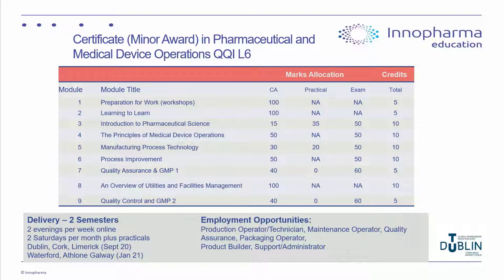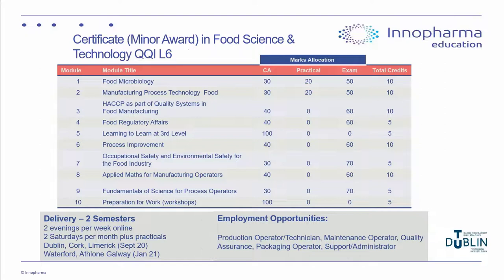The Level 6 Certificate in Food Science and Technology is very similar in structure — two semesters, two evenings per week, two Saturdays per month. It covers areas like food microbiology and food regulations. It starts in Dublin, Cork, and Limerick in September, then Waterford, Athlone, and Galway in January. Combining both Level 6 programs gives you a full Level 6 Major Award — a Higher Certificate.